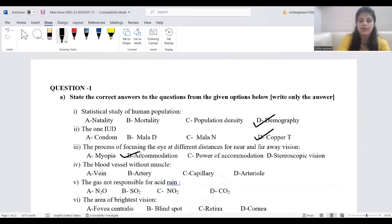The blood vessel without muscle, that is capillary. The gas not responsible for acid rain, the correct answer is carbon dioxide.